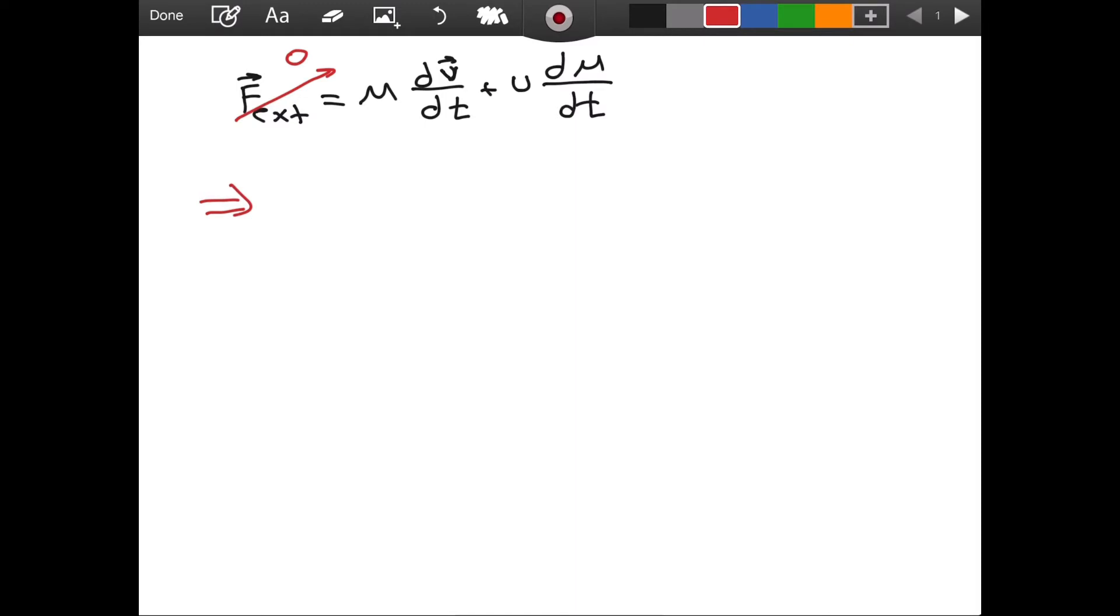If we subtract this part from both sides, we will have negative M dv/dt is equal to u dm/dt. And, my bad, put the arrow on top of u. It is a velocity.